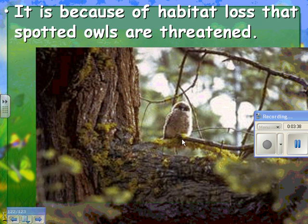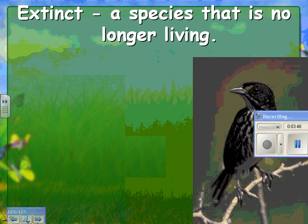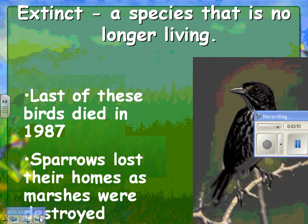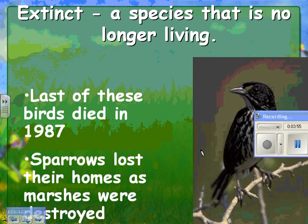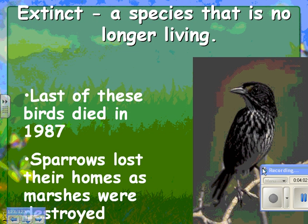For example, the spotted owl is now endangered because its habitat is being destroyed. Finally, extinct means a species is no longer living. This particular type of sparrow's last individual died in 1987. There are lots of other types of sparrows that are endangered, but this particular one isn't around anymore because it doesn't have a home.